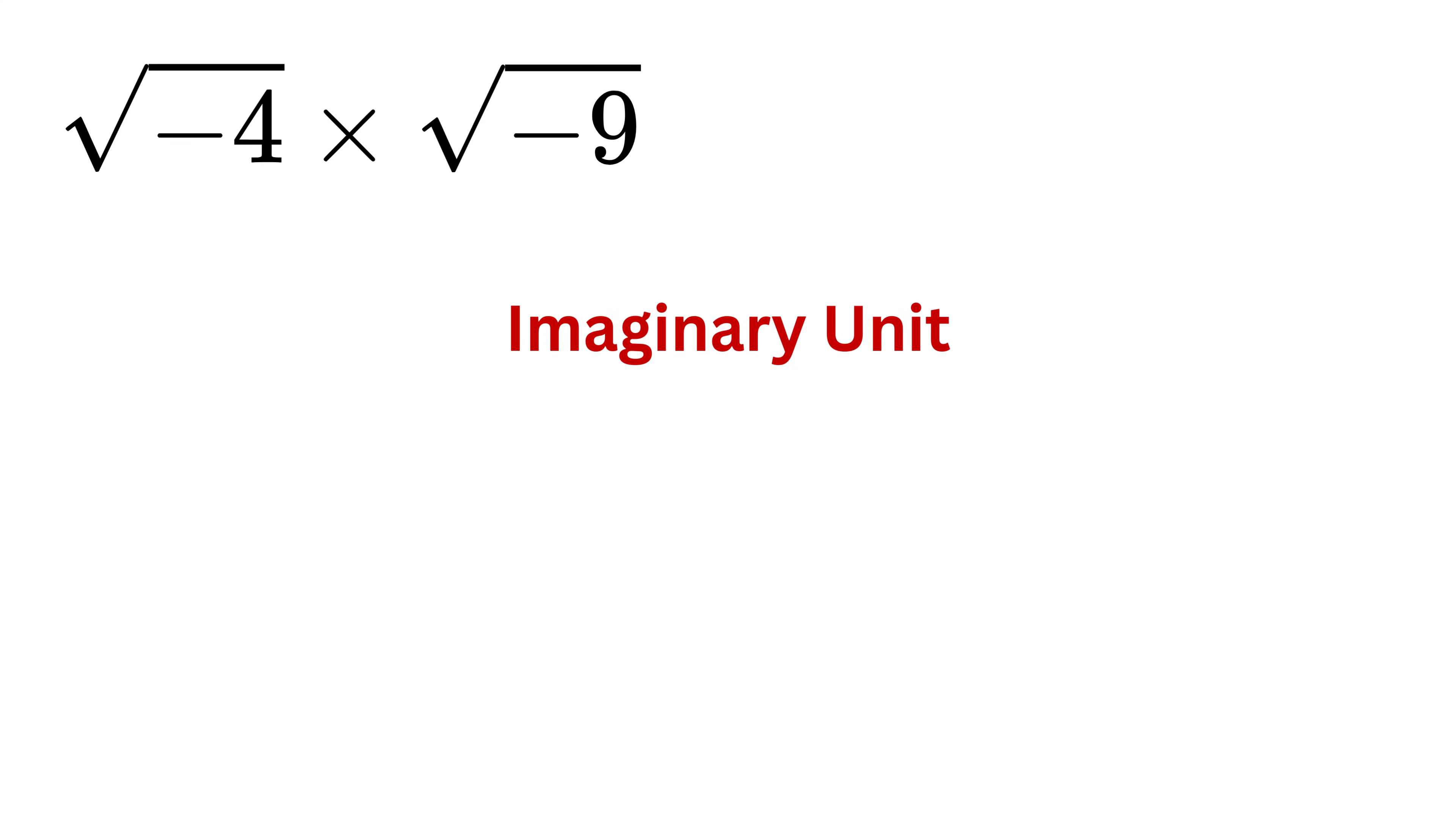And that idea is called the imaginary unit, usually denoted by the letter i. It is defined as the square root of minus 1. This single definition allows us to make sense of square roots of all negative numbers. So what will be the value of i squared? It will be minus 1.